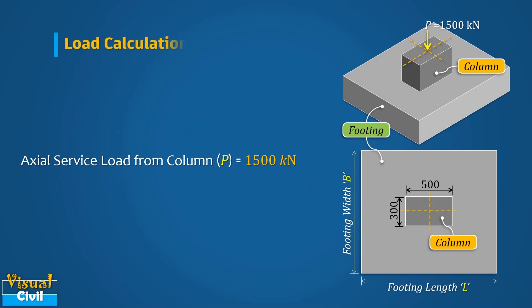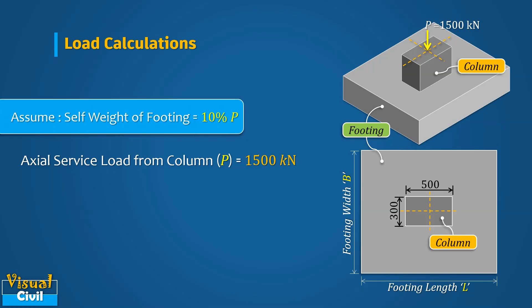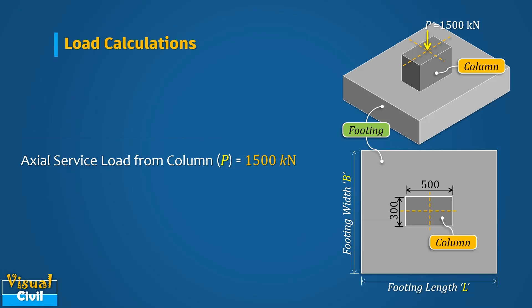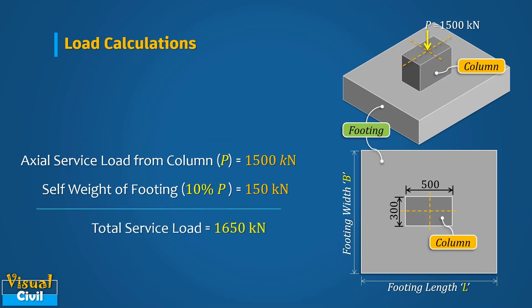First of all, let us calculate the total load on the footing. Assume the self-weight of the footing equal to 10 percent of the axial load from the column, which equals 150 kilo-newton. The addition of the axial load from the column and footing self-weight gives the total service load, which is 1650 kilo-newton.